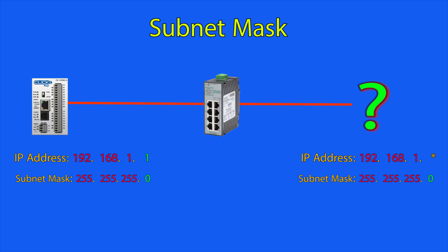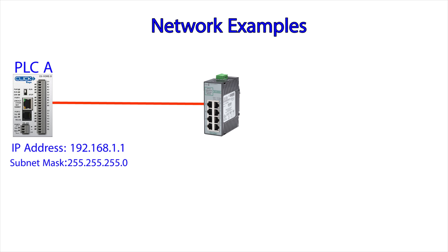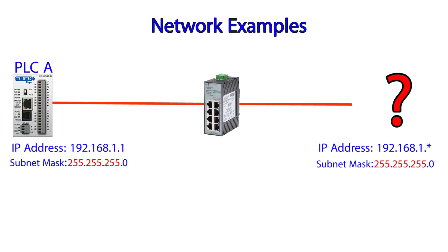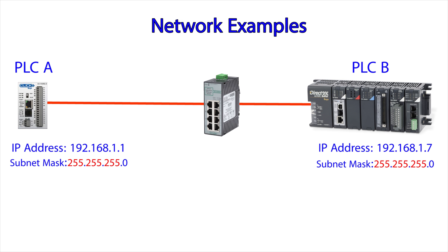Let's see some examples to make this point clear. So we have PLC A. We can see that the first three octets of the subnet mask are 255 and the last is 0. This means that any device wanting to communicate with this PLC would need to be 192.168.1.something. Now let's add in PLC B to our switch. Will these two devices be able to talk? Yes — the first three number groups of the IP addresses match and the last is different.